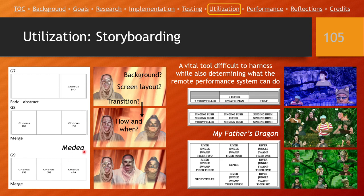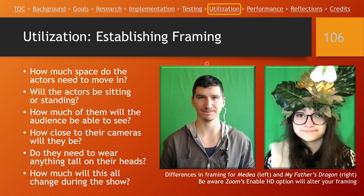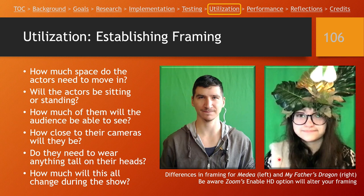Establishing framing is a big thing — how should we have the actors framed in their video? For Medea, we left very little space above the top of the actor's head because they didn't have any costume pieces on their head, and we wanted to see more of the upper body costume. They also don't move around too much. For My Father's Dragon, they were wearing quite a lot of different costume pieces on top of their heads, so we needed more space in the video for that, and they wore fairly simple costumes on their upper body so we didn't need to see as much of that.